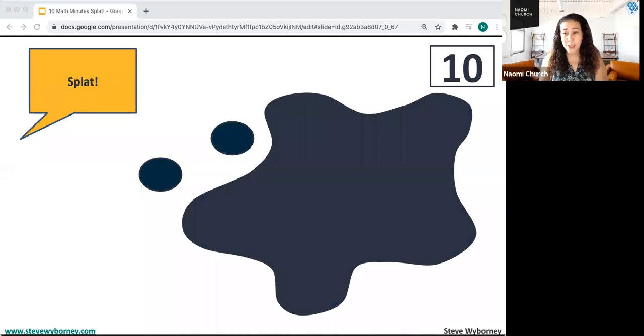The next thing we do is put the splat down. So splat. Now we ask, how many shapes are under the splat, and how do you know?